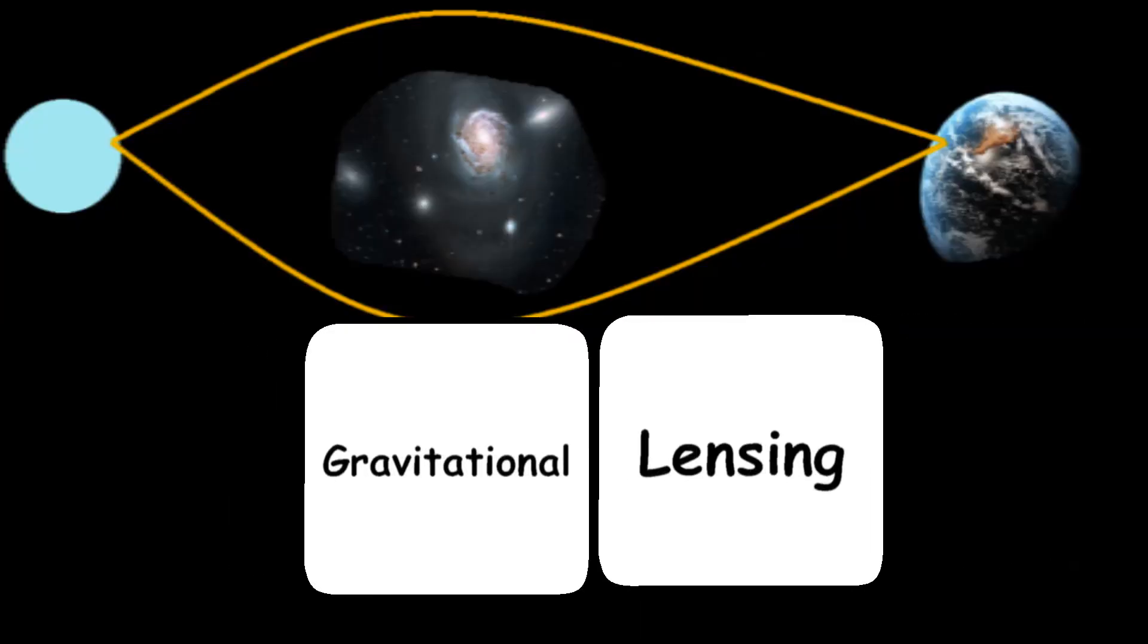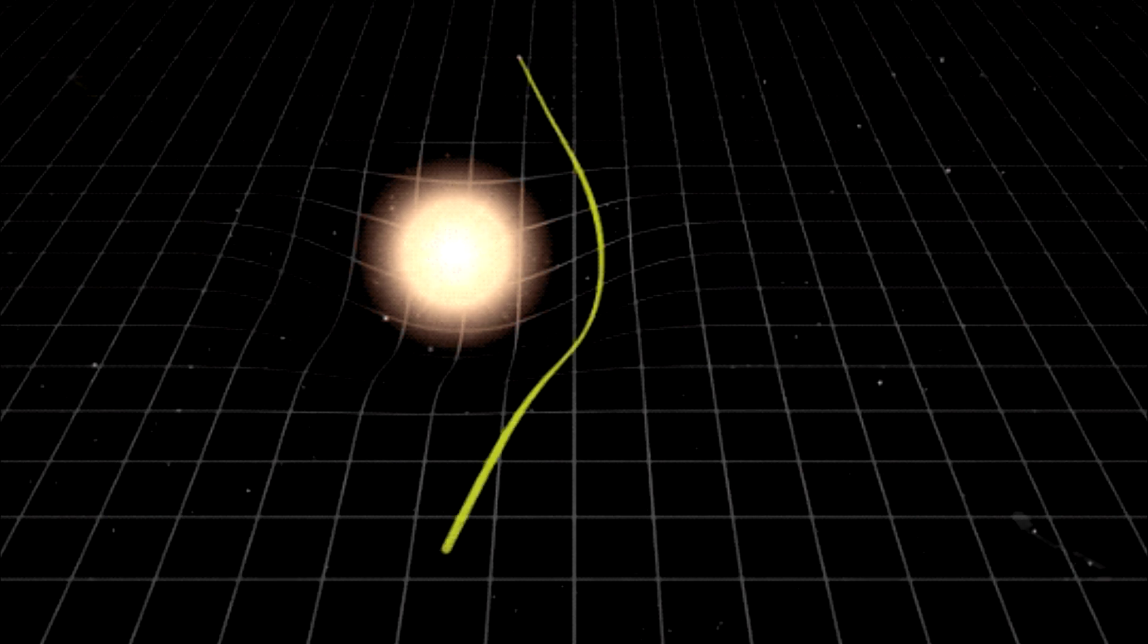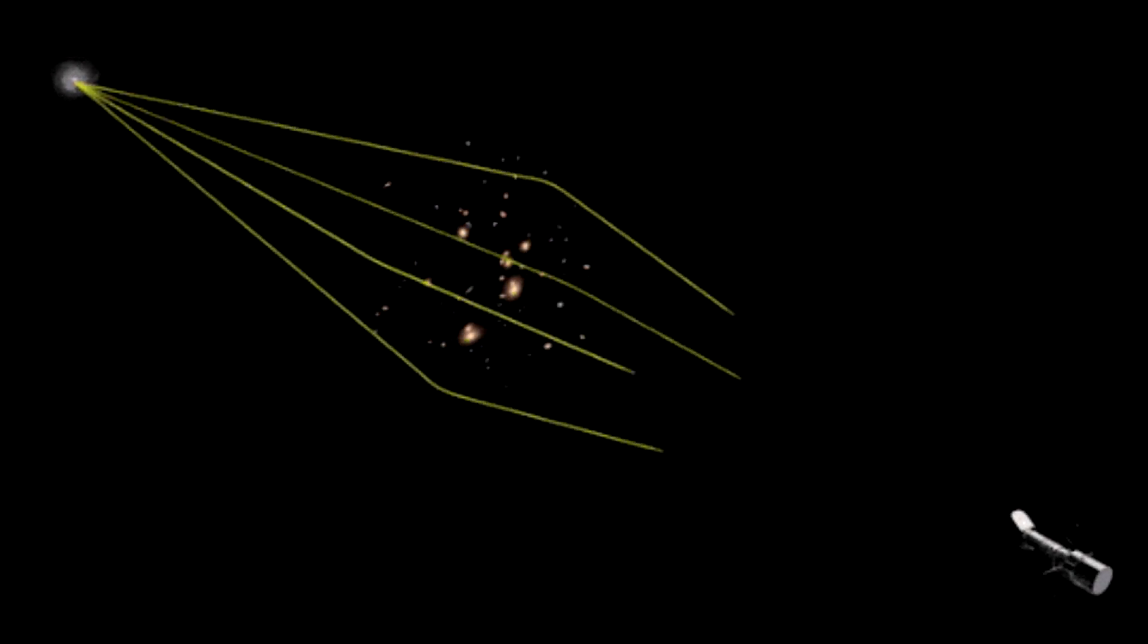And it's called gravitational lensing. The fact that mass bends spacetime and that light takes the shortest path through space causes this lensing effect.